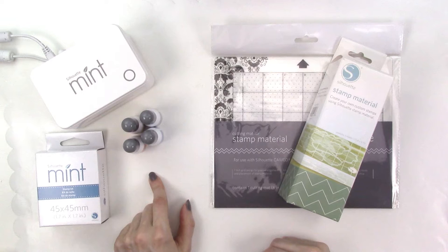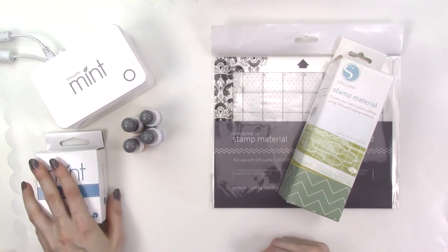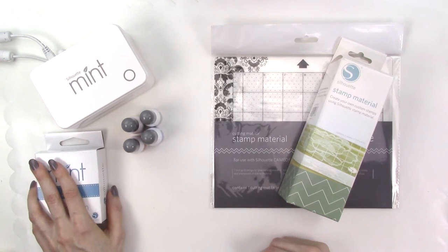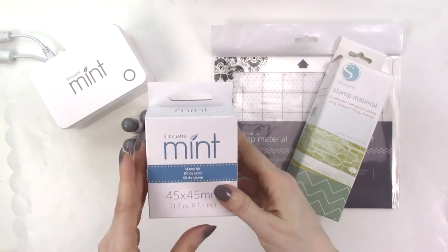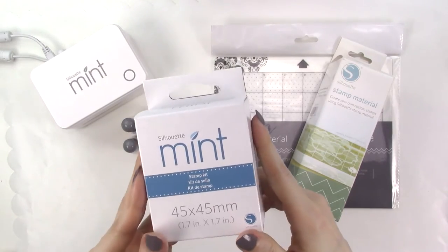In addition to the four colors of ink that come with the Mint starter kit there are at least 10 or 11 additional ink colors that you can purchase separately and at the time of this video they were $3.99 each from both Amazon.com and the Silhouette America website. You can also purchase additional stamp kits and stamp sheets which come in a variety of sizes in range of price from $4.99 for the smallest size to $16.99 for the largest.